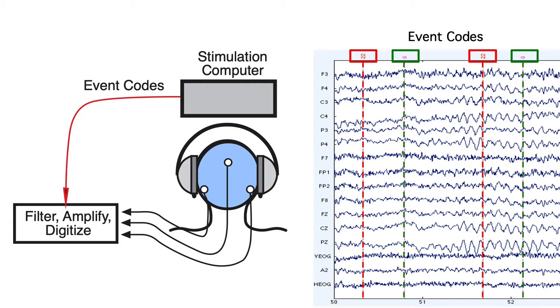Any time a stimulus is presented or a response occurs, an event code is sent from the stimulus presentation computer to the recording computer. This indicates what the event was and exactly when it occurred.